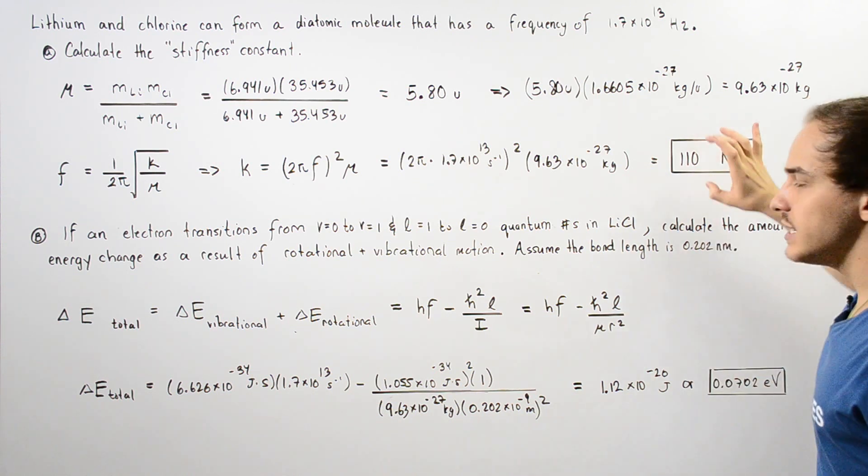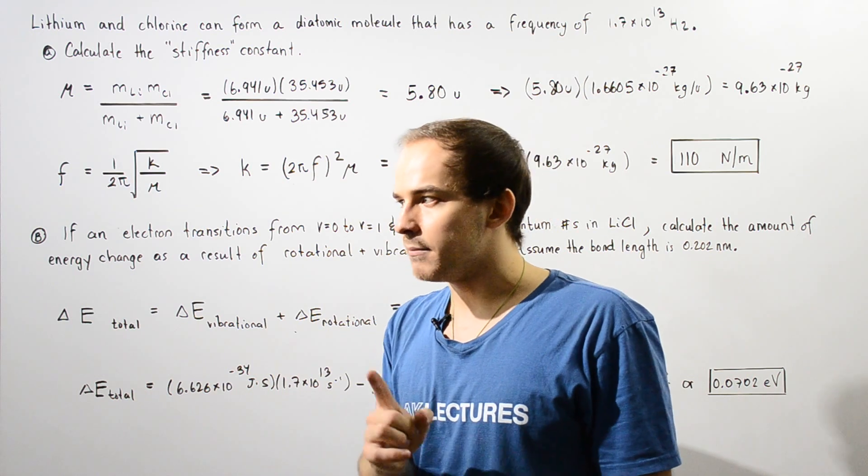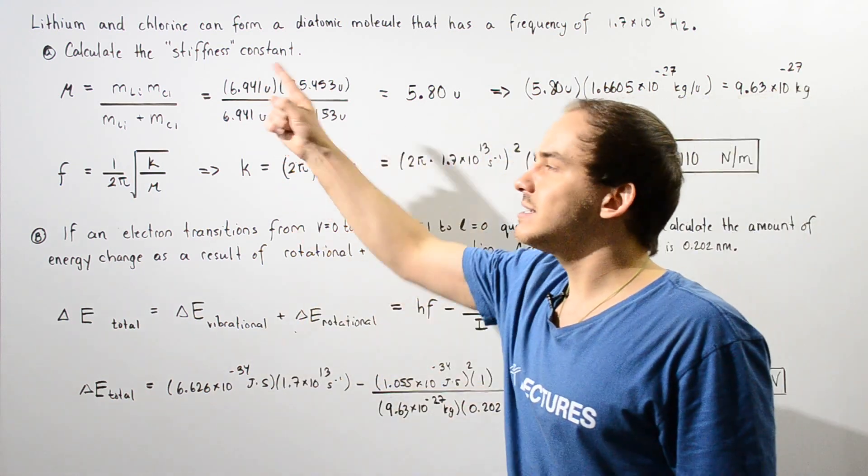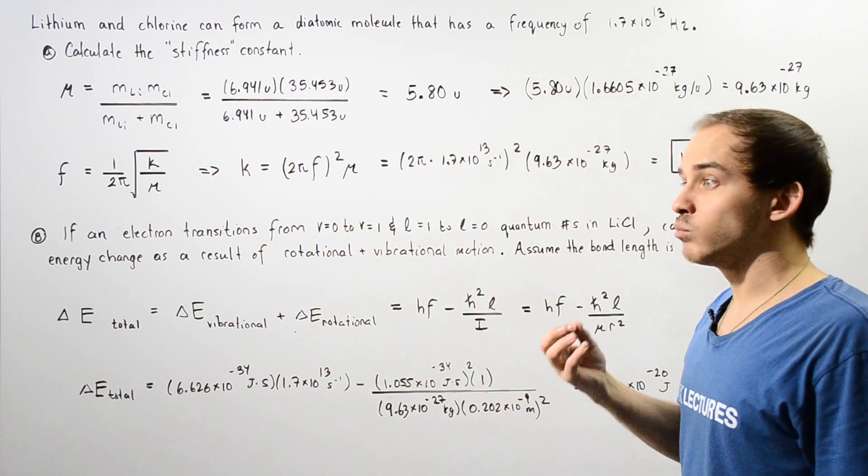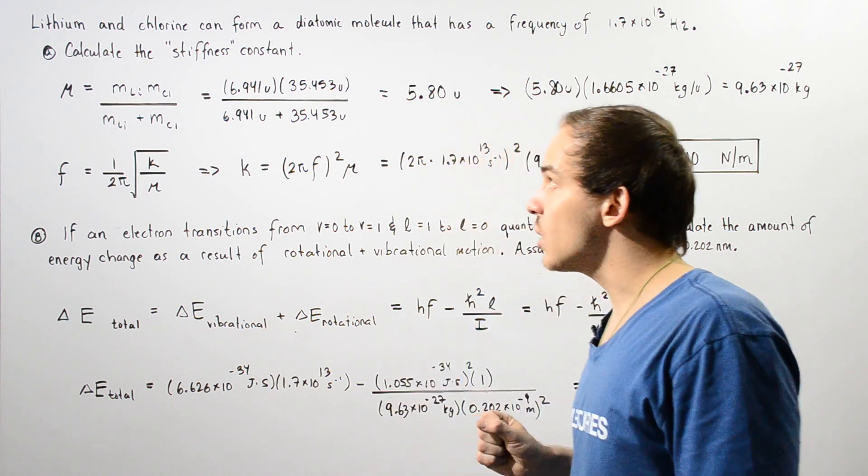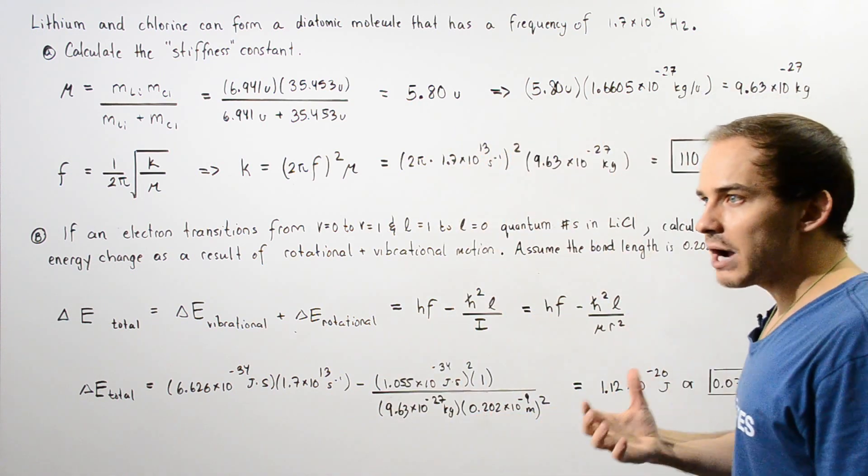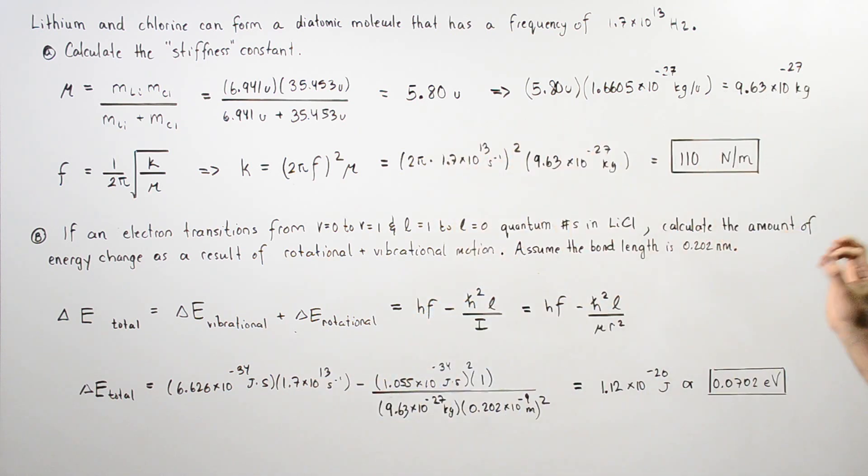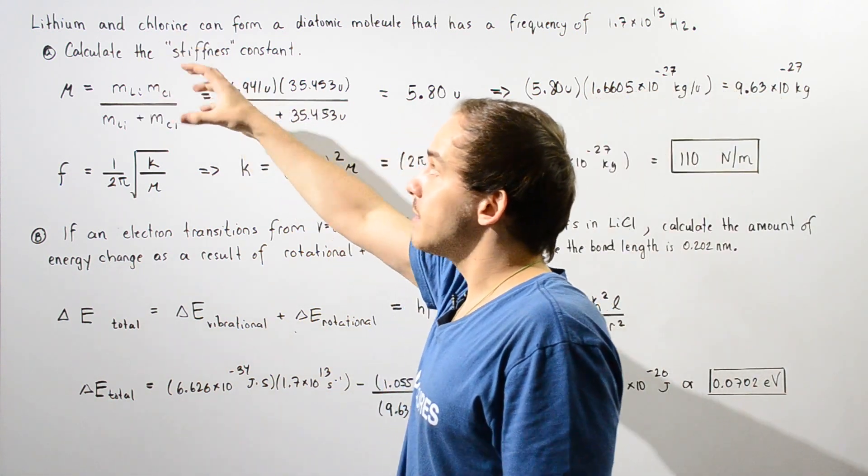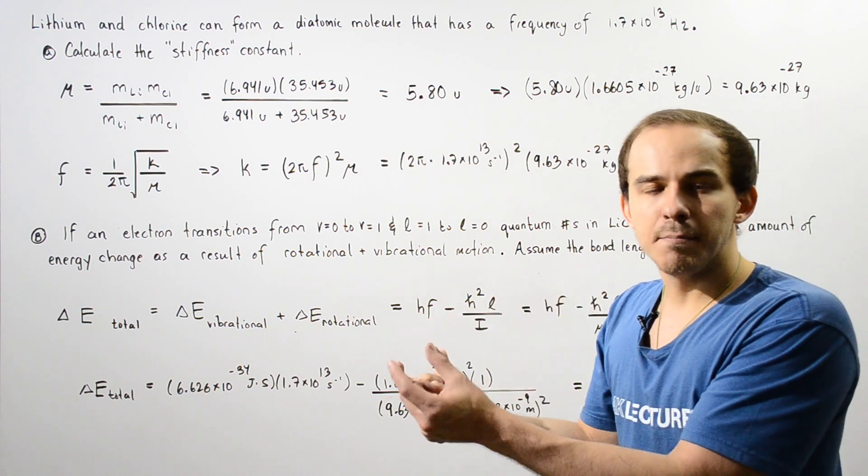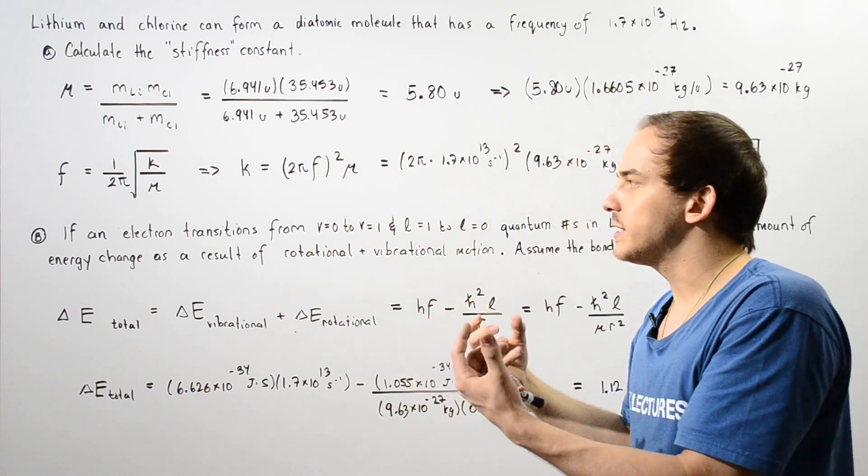Notice this is a relatively small value. For example, in our lecture when we calculated the stiffness constant for carbon monoxide which has a double bond character, we saw the stiffness was about 1850. In this case, it's only 110, and that makes sense because the bond between lithium and chloride is an ionic bond, a relatively weak bond.